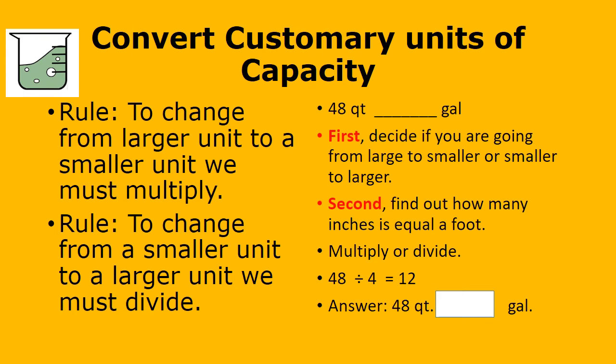Now let's look at capacity. Remember, capacity is how much something holds. We have 48 quarts equals blank gallons. Which one is greater? Gallons is greater, so we're going from smaller to larger, and we divide. How many quarts equal a gallon? 4. So we divide 4 into 48 equals 12. That's our answer.